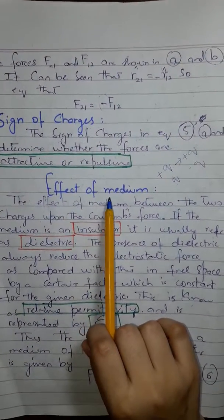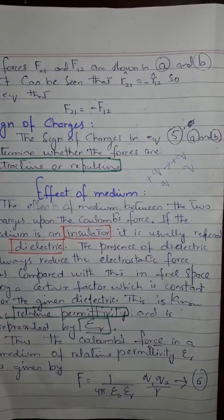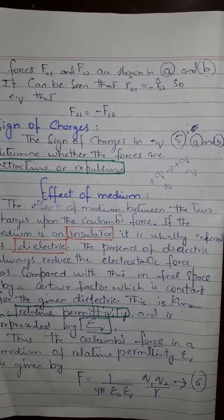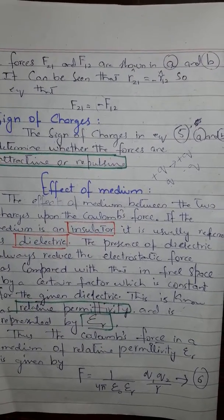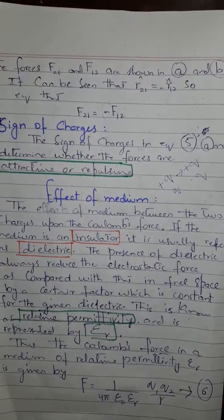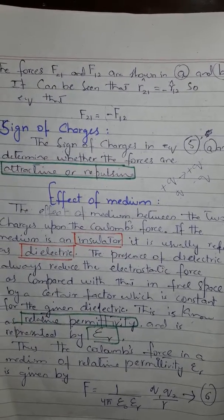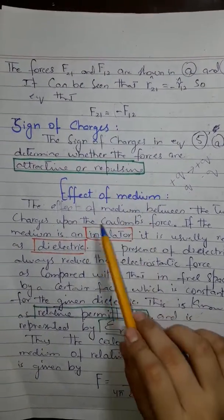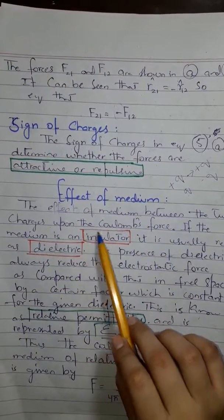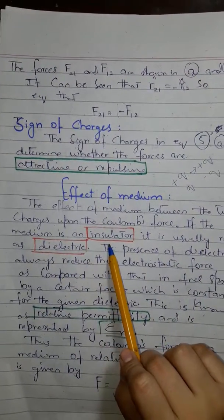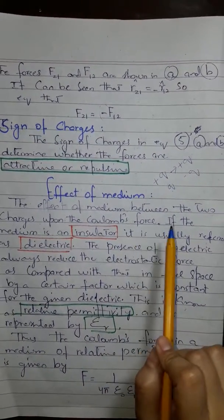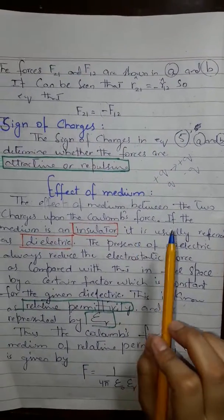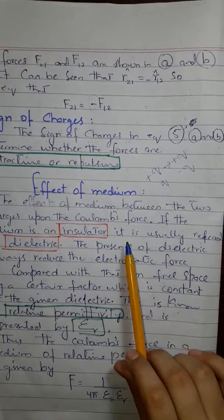The sign of charges in these equations determines whether the forces are attractive or repulsive. If both point charges are positive, the forces between them are repulsive. If one charge is positive and the other is negative, they attract each other. The sign of the force depends on attraction or repulsion.